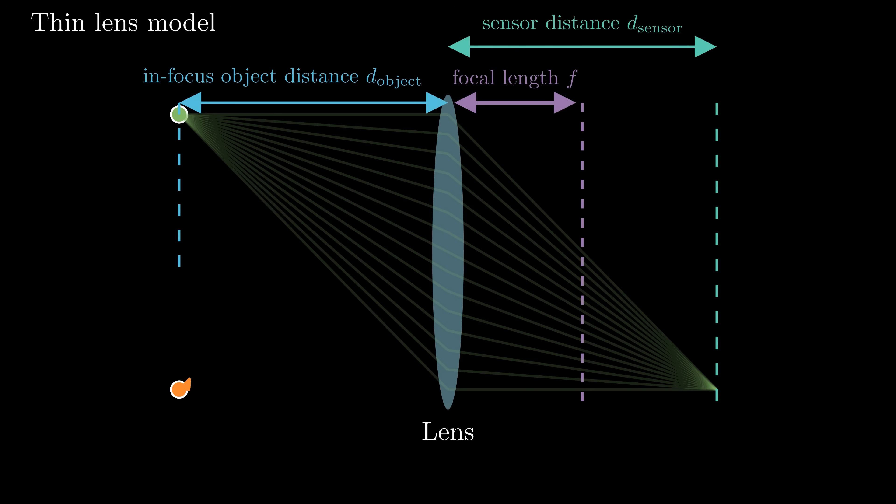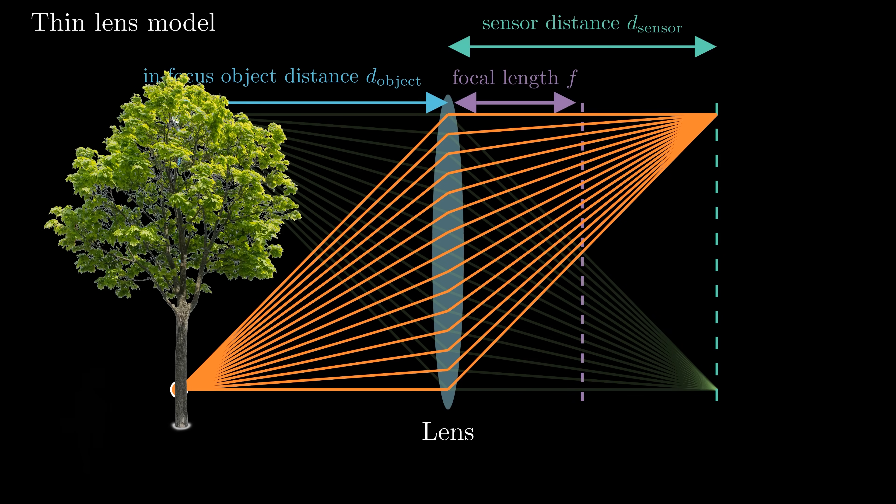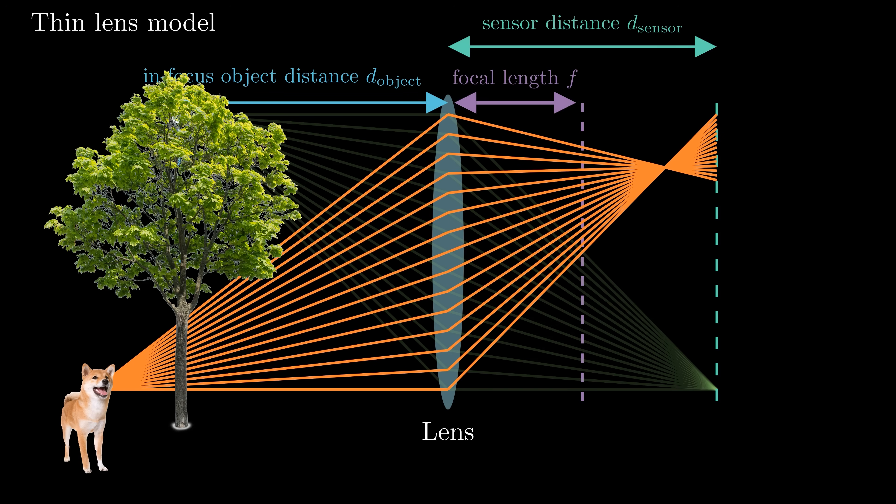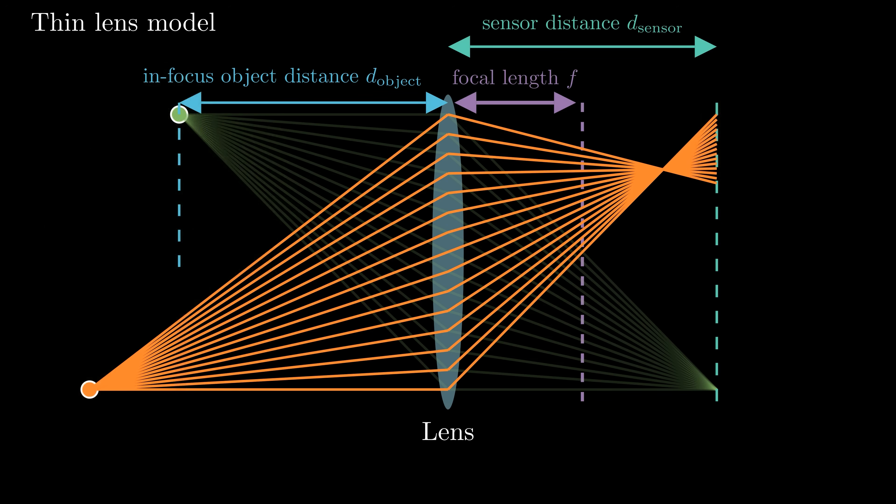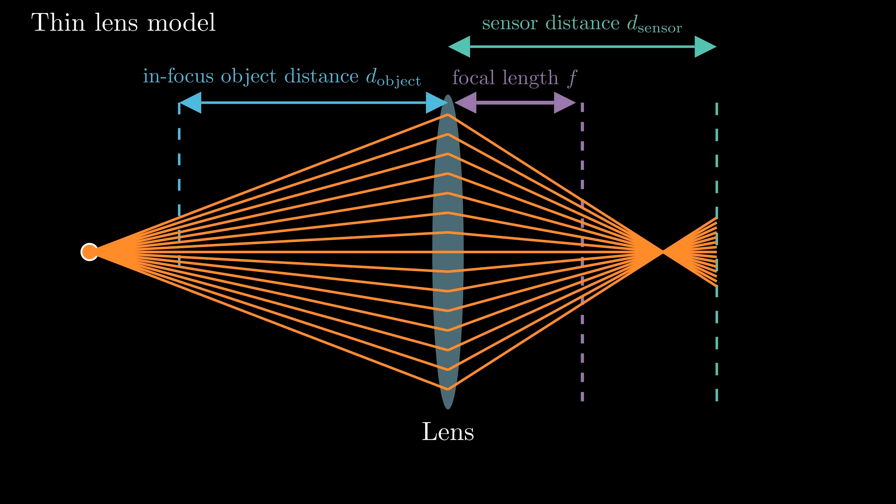All the points on this focus plane appear perfectly sharp on the sensor. But there's no free lunch. Imagine there's a dog behind a tree. The light rays coming from the dog converges to a point before reaching the sensor. As a result, we get a blurry image of the dog. This is called the focus blur. When an object is not perfectly in focus, the reflected light rays spread out into a small disk on the sensor rather than a single point. We call this disk the circle of confusion. The size of the circle of confusion determines how blurry a point appears on the image.